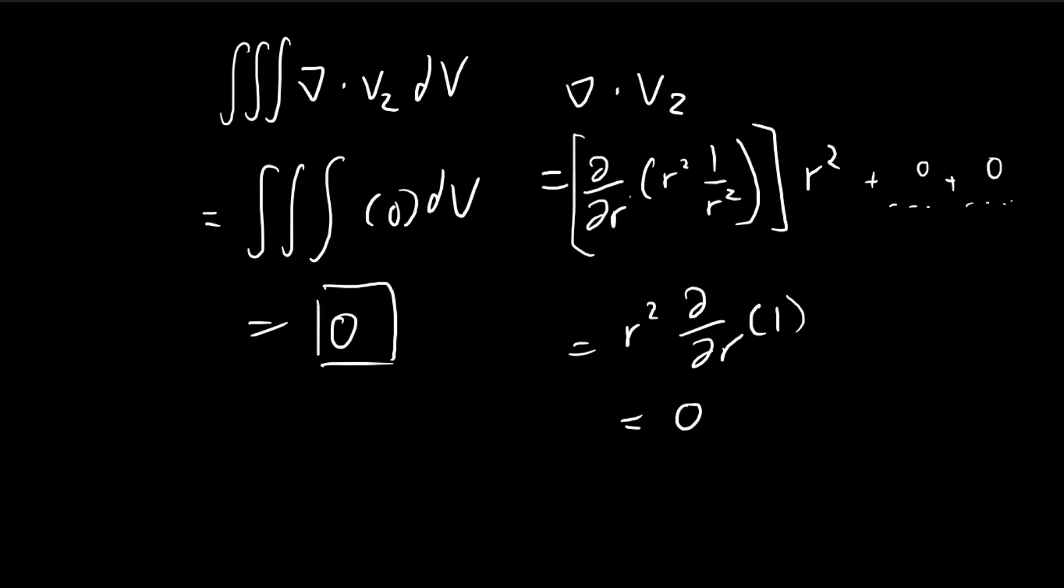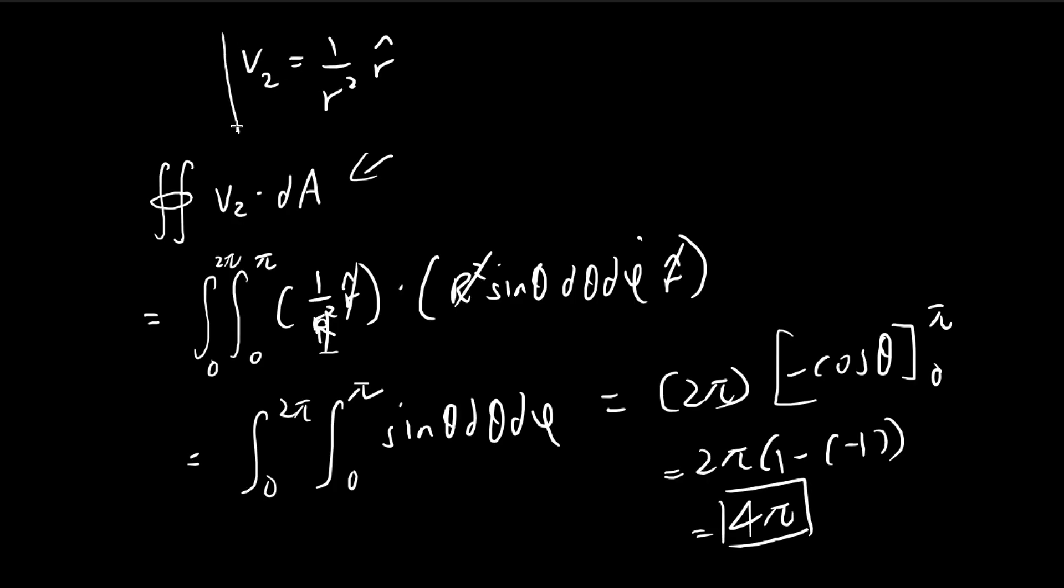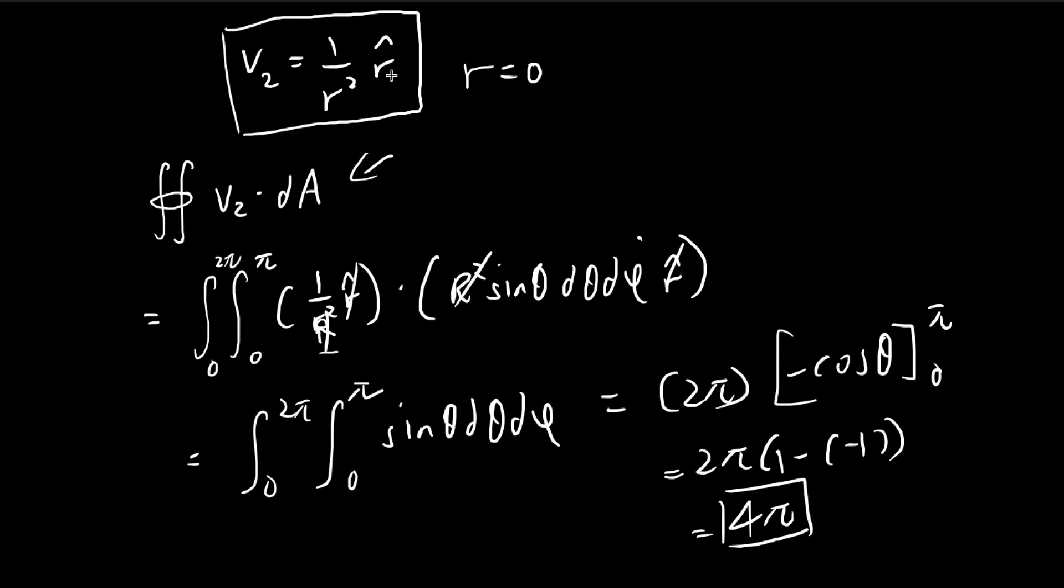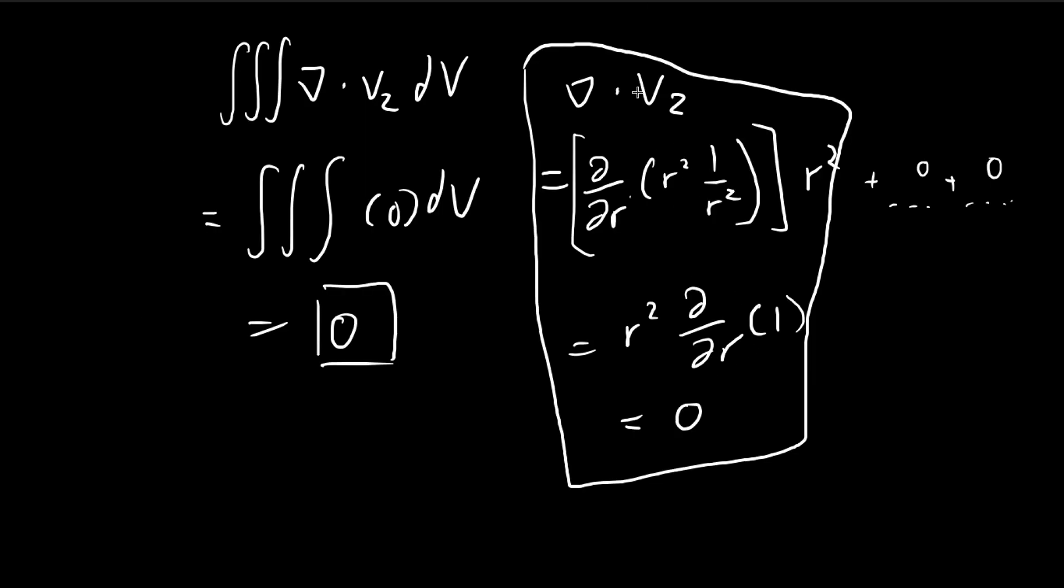Actually, the catch here is that this vector field has something fishy going on when r equals 0 at the origin. The divergence we calculated is true that it equals 0, but only when it's not at the origin. When it's at the origin, this thing blows up and the divergence is not equal to 0. It's equal to 0 everywhere else, but not at the origin.